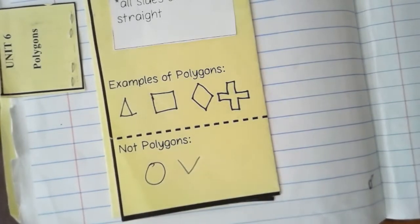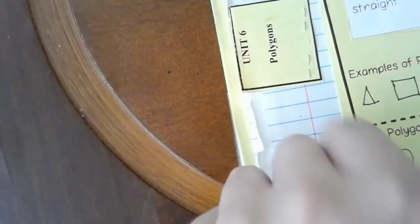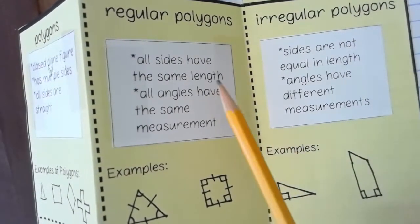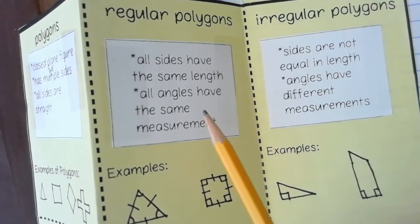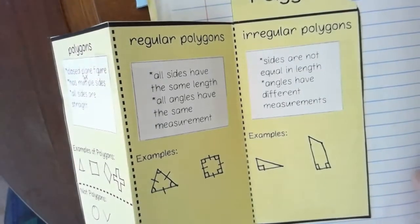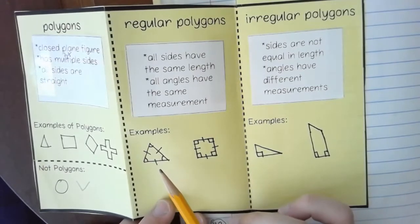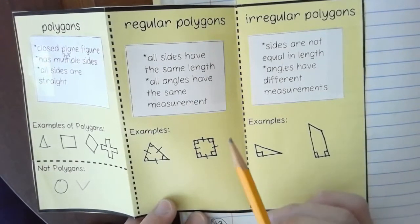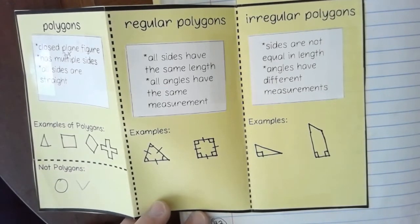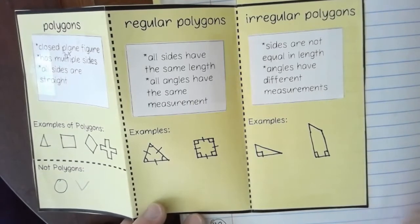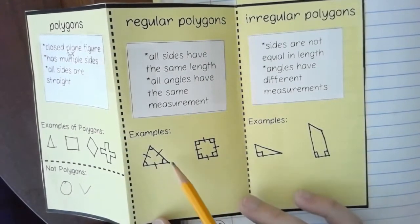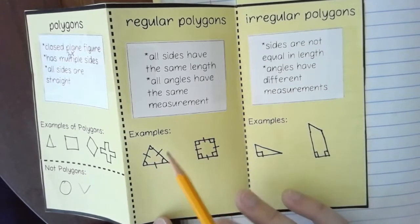Once we classify shapes as polygons, we can talk about regular versus irregular polygons. A regular polygon has all sides the same length and all angles the same measure — all congruent sides and all congruent angles. For example, a triangle can be a regular polygon, but it has to be a very specific type: an equilateral, equiangular triangle where all sides are the same length and all angles are the same measure.